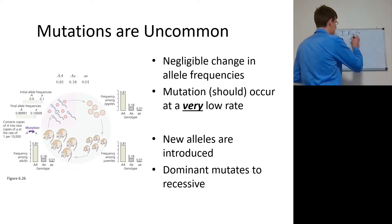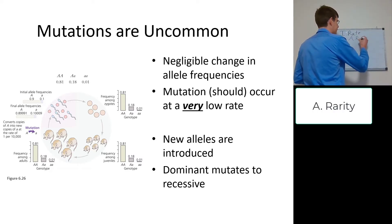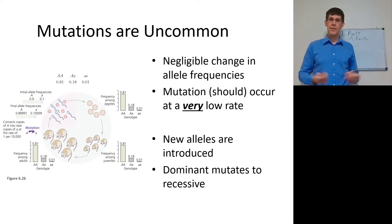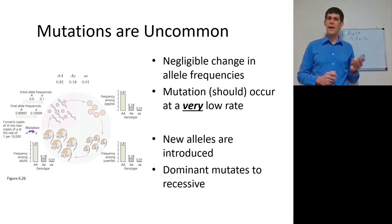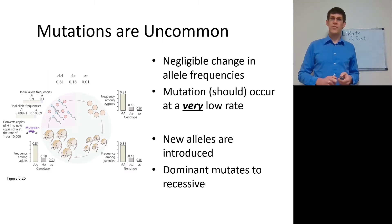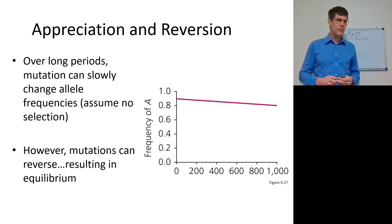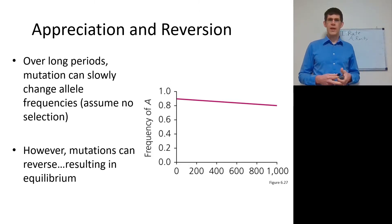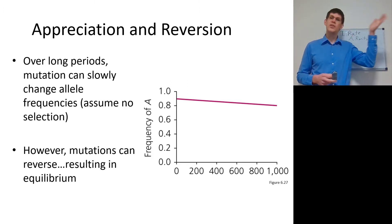Mutations are going to be rare. Even more rare are mutations that are expressed in the phenotype, because a lot of DNA is simply not transcribed. DNA that is not transcribed but has mutations is neutral and you're not going to see that mutation. Over time, however, mutations can slowly change allele frequencies in what we call appreciation — so over time the frequency of an allele can change gradually.